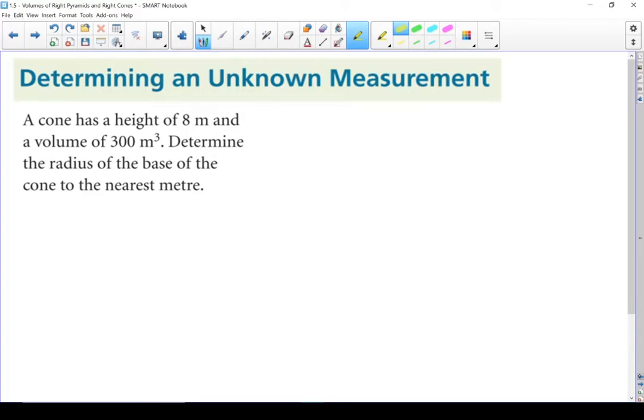Last example. Let's find an unknown measurement. A cone has a height of 8 meters and a volume of 300 cubic meters. Determine the radius of the base of the cone to the nearest meter. What do we need to find? Radius of the base. What do we know? Height of 8 meters, volume of 300 meters cubed. Let me do a quick sketch.